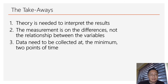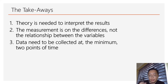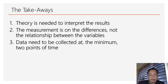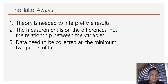The second thing to remember is that when you look at evaluation, the measurement is on the differences, not on the relationship between variables. The third point is that data needs to be collected at a minimum of two different points in time: pre-test and post-test, and if possible, you might want to look at a re-test. If you want to know more about how to enhance the causality of your results, you can check out my other videos about quasi-experimental research on how to improve causality.